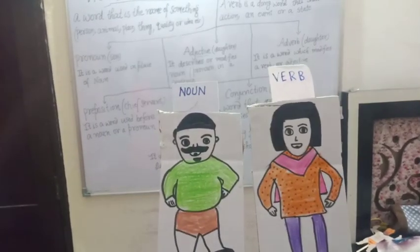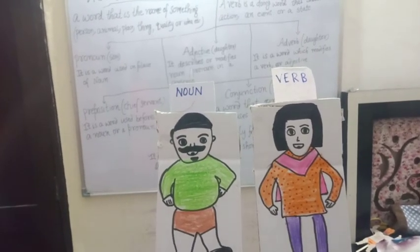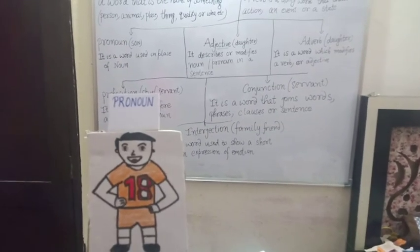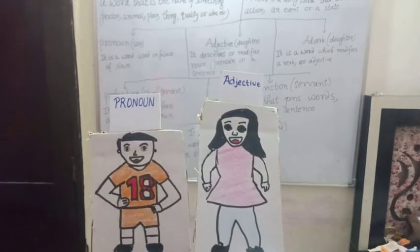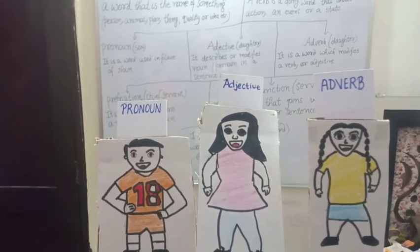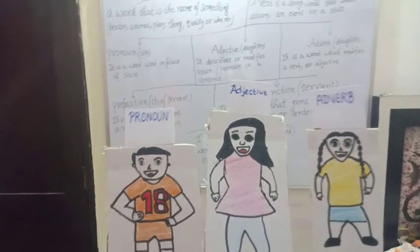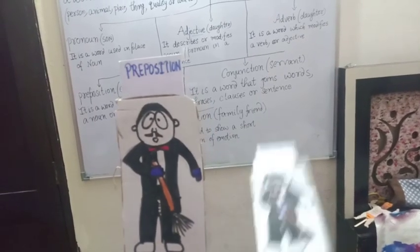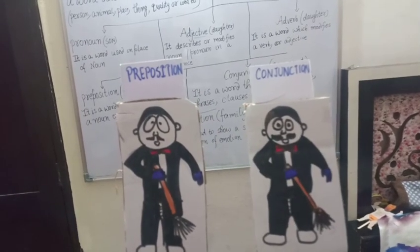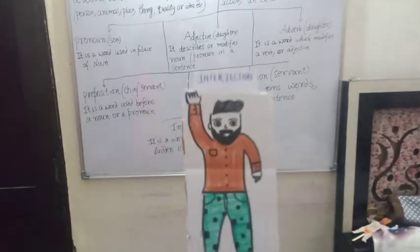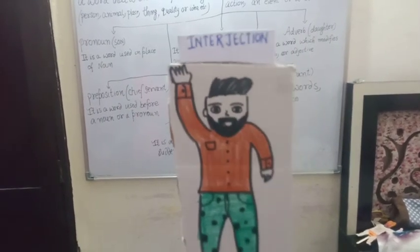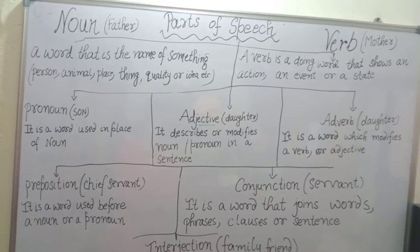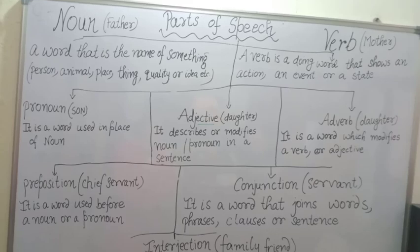First of all, we have Mr. Noun and his wife Mrs. Verb. They have a son named Pronoun. They have a daughter, Adjective. One more younger daughter, Adverb. They have two servants at their home — one is Preposition and the other one is Conjunction. Last but not the least, they have a family friend named Interjection. Now, the parts of speech family is coming to introduce themselves one by one.